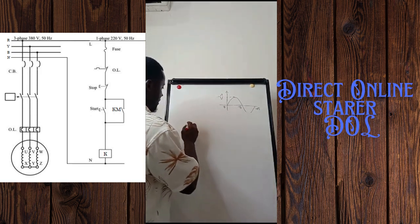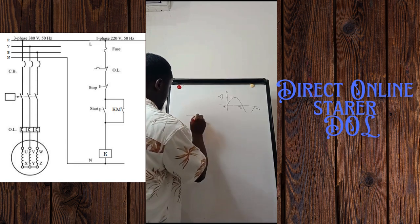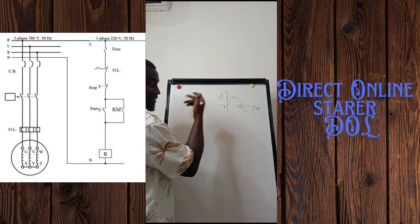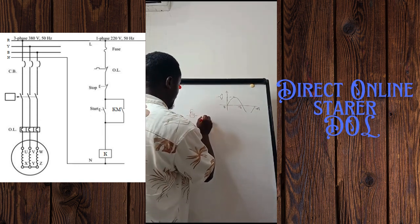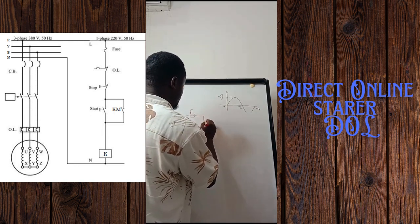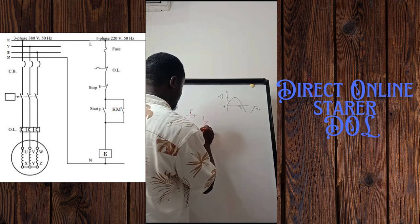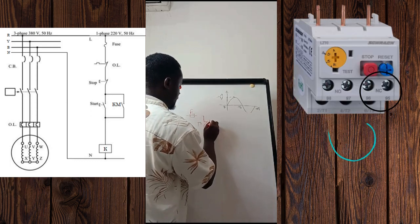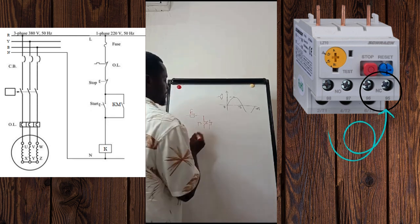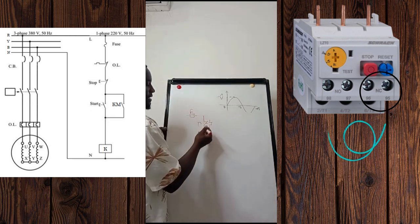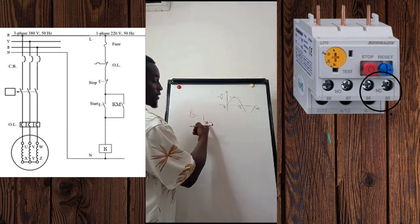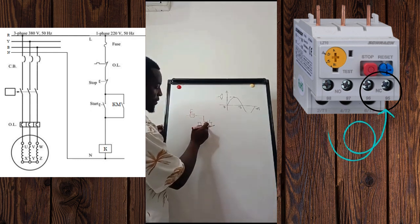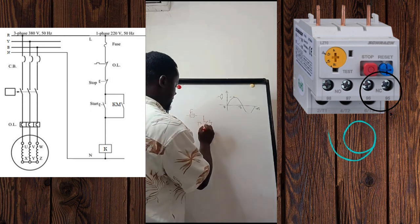To start with a direct online startup, we need a fuse or a circuit breaker. The next component we need is a thermal relay. We are going to connect it to a normally closed contact, and as we keep going, you'll understand the reason why we are connecting to the normally closed contact of the thermal relay.